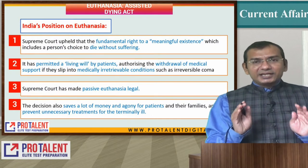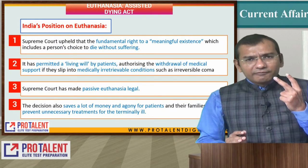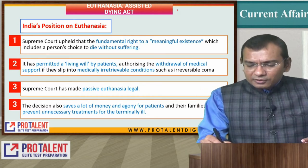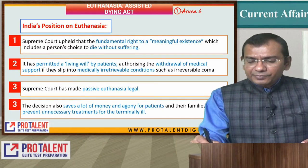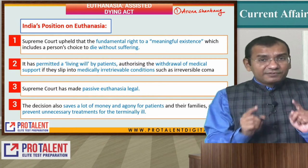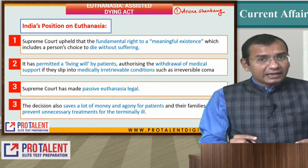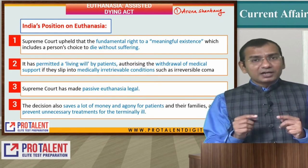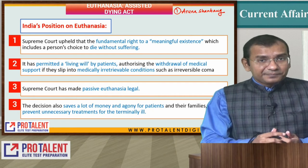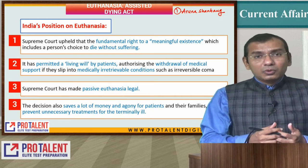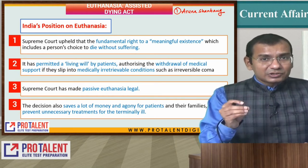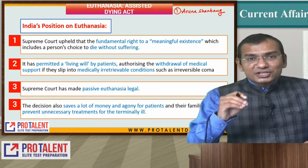Let us understand this in the Indian context. In India, there were two very important landmark cases. One was the famous case of Aruna Shanbhaag versus Union of India, wherein it was clearly established that we cannot have Active Euthanasia. Aruna Shanbhaag was a nurse who became terminally ill and was in a vegetative state, but she was not allowed to be given medication to end her life. She died after some 30 years in a coma — a natural death.